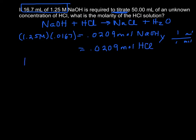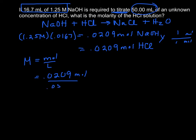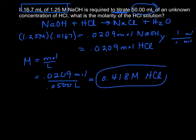Since molarity is moles over liters, we plug in our moles — 0.0209 — and it said we had 50 milliliters of the HCl, so 0.05 liters. We discover that the molarity of our HCl was 0.418 molar HCl. So by figuring out how much NaOH we needed to titrate the HCl, we were able to standardize or discover the molarity of the HCl.